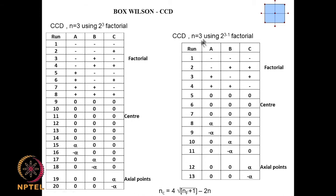We can also do Box-Wilson CCD with a fractional factorial — using 2^(3−1) with only 4 experiments for the factorial region — keeping the center points and star points (±α for each factor). In this case the formula gives: 4√(4+1) = 4×2.236 ≈ 10, minus 2×3 = 6, giving approximately 3 center points. So depending on the factorial portion used, you substitute NF accordingly.